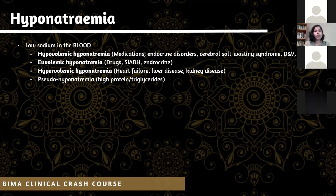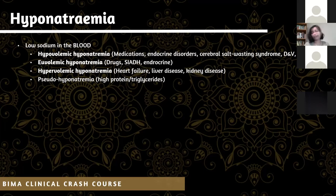Then you have pseudohyponatremia, where sodium appears less than 135 but actually isn't — it's because the patient has so much protein and triglycerides in their blood that it automatically reduces the apparent concentration of sodium. Sodium is measured in millimoles per liter, so it's a concentration measure, not an absolute level.